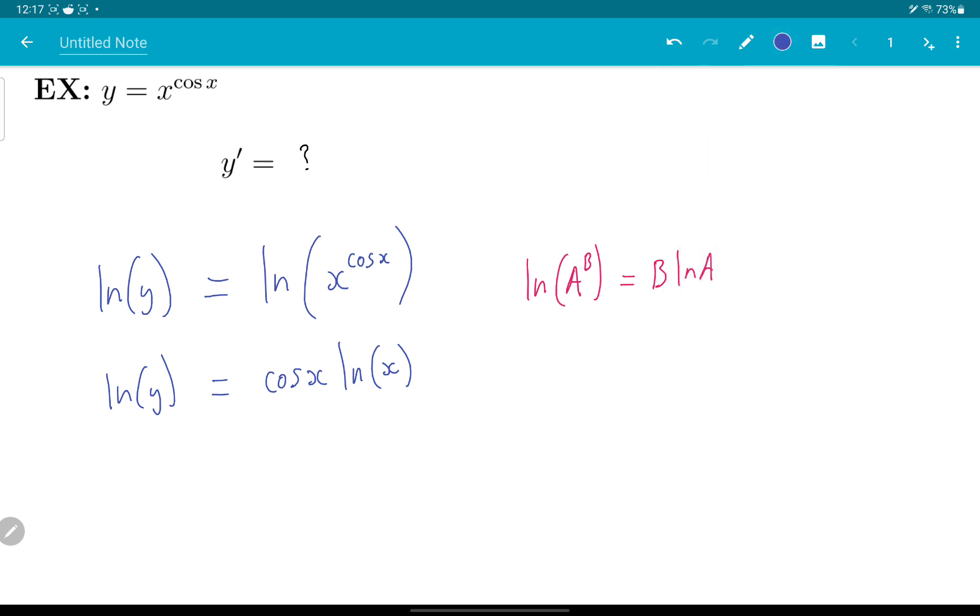Okay, now we're in a position where we can do a derivative. I should say that at the beginning, I got this x to the power of cos x, which is not something we've encountered thus far. You have a variable in the base and you have a variable in the exponent. We do not yet have a rule for how to deal with that. So that's why we're doing this ln thingy.